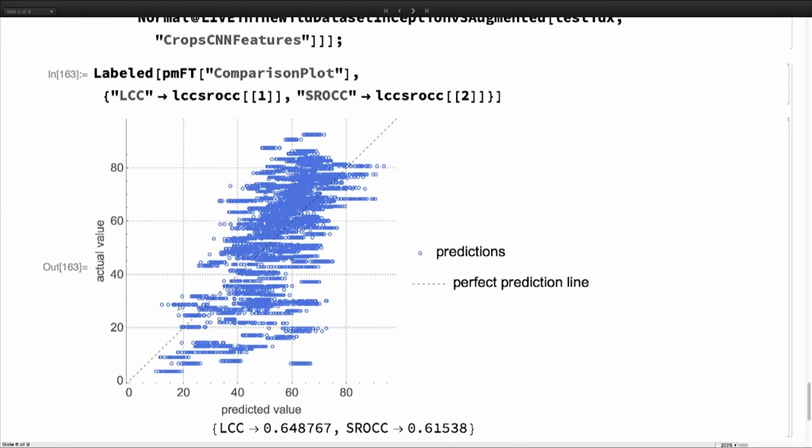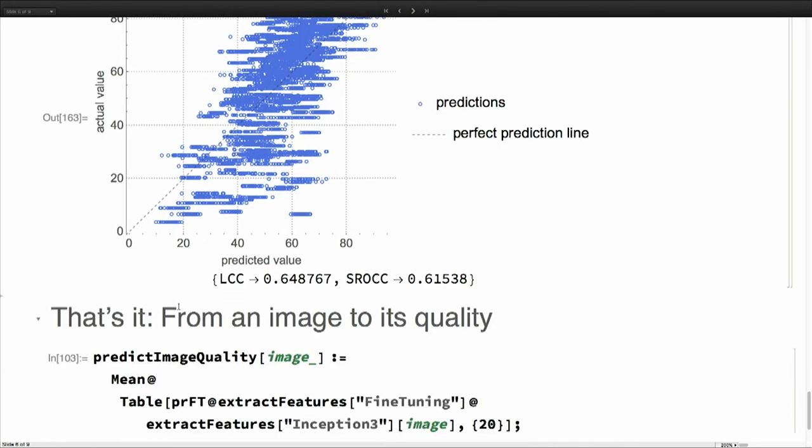This is the results here. The correlation coefficient is okay, I mean 65. This is what it should be and this is what we have. Ideally it would be on the diagonal. We are doing kind of okay around this center area.